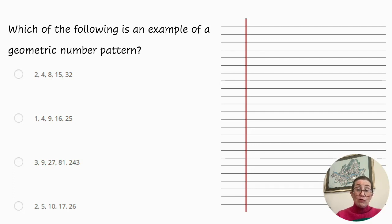The first one is 2, 4, 8, 15, and 32. There is no pattern here whatsoever. The second one is the sequence of squared numbers from the previous question, and is simply called the square number pattern. So that doesn't fit either.